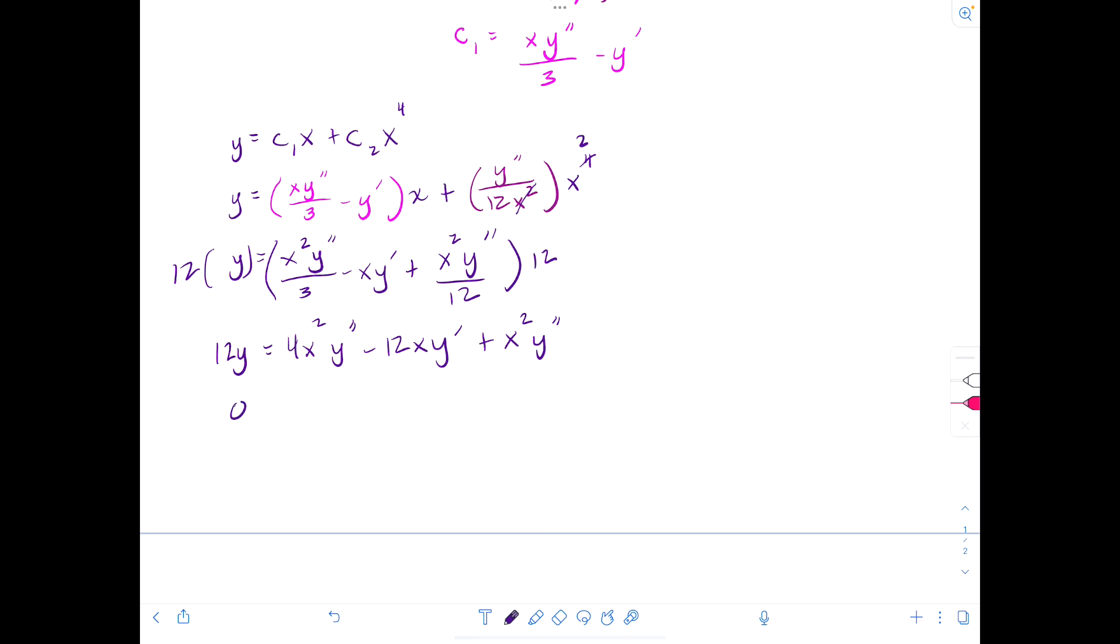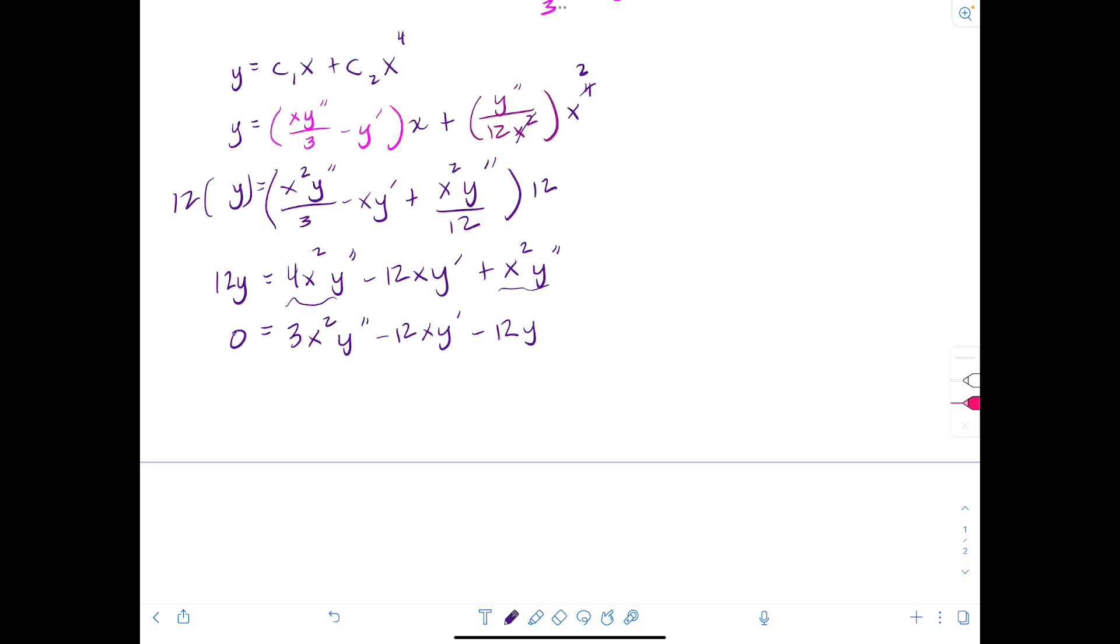And then we'll have zero is equal to these two are like terms. So we'll get 3 x squared y double prime minus 12 x y prime minus 12y. And then we can divide a 3 out of everything. So we get zero is x squared y double prime minus 4 x y prime minus 4y. And then we're done.